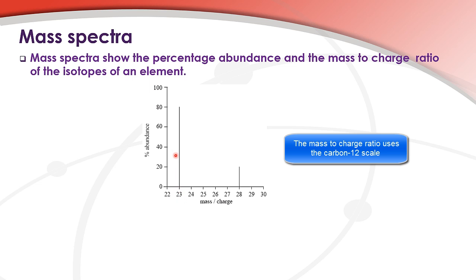Out of 100 atoms, 80 atoms have a mass to charge ratio of 23, and 20 atoms have a mass to charge ratio of 28.